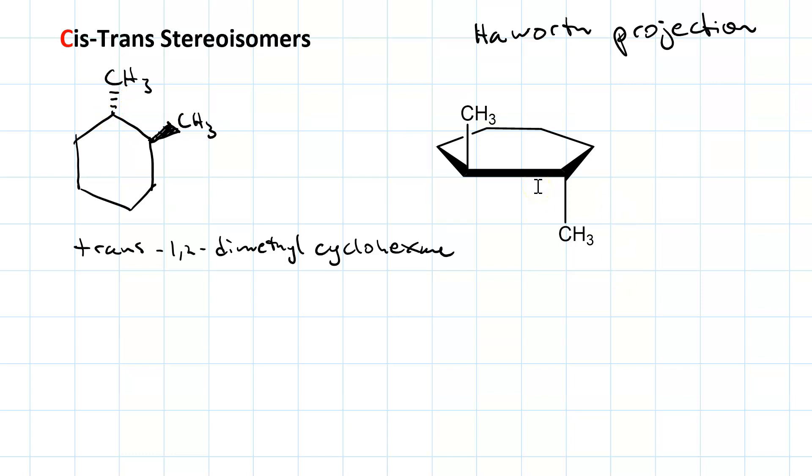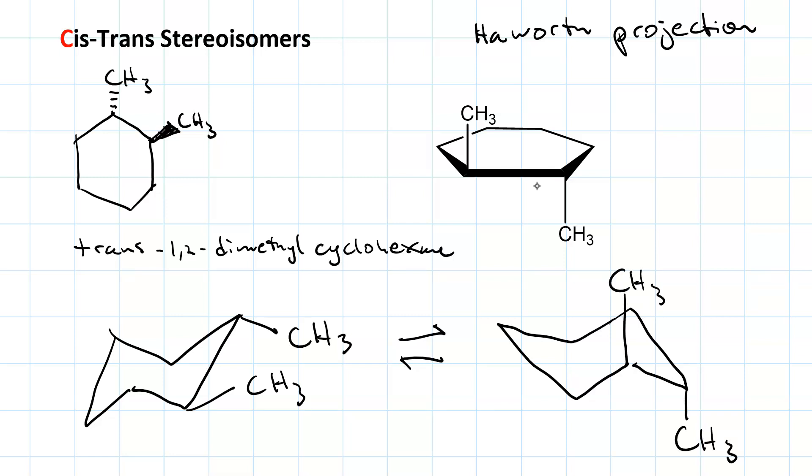Now, if we look at the chairs... There's that one. And this one. So, on the left, both are equatorial, which is much more stable than having both of them axial.